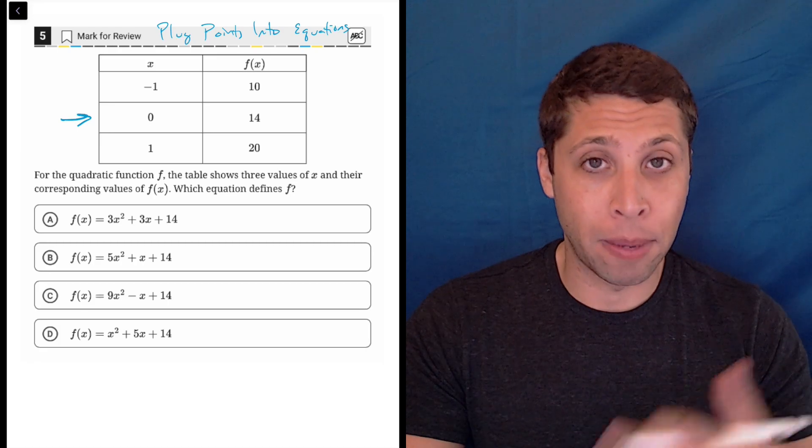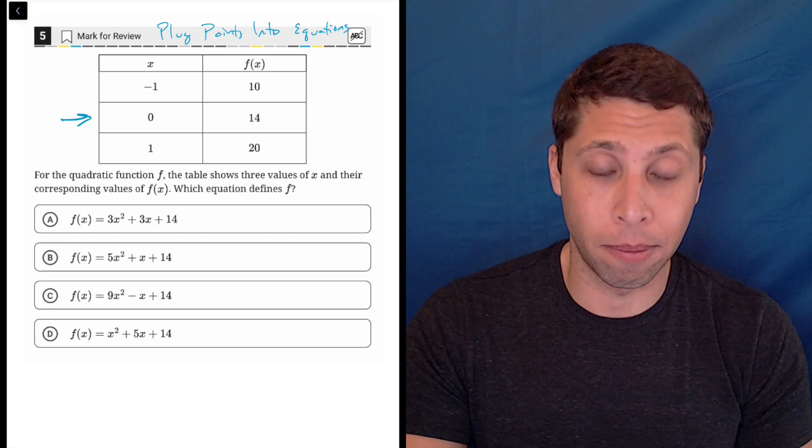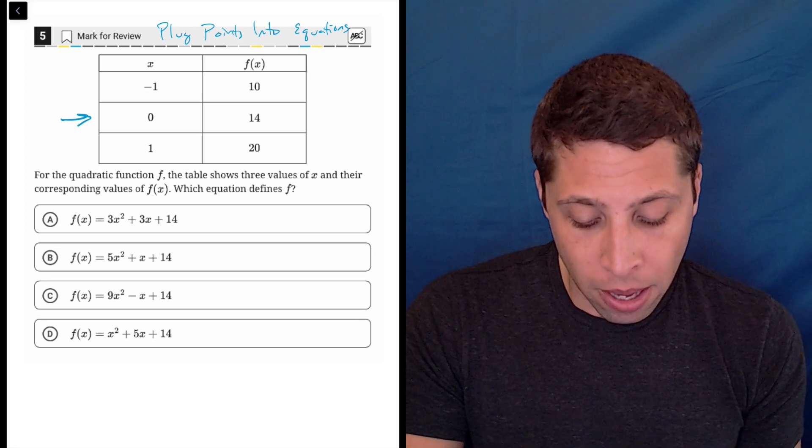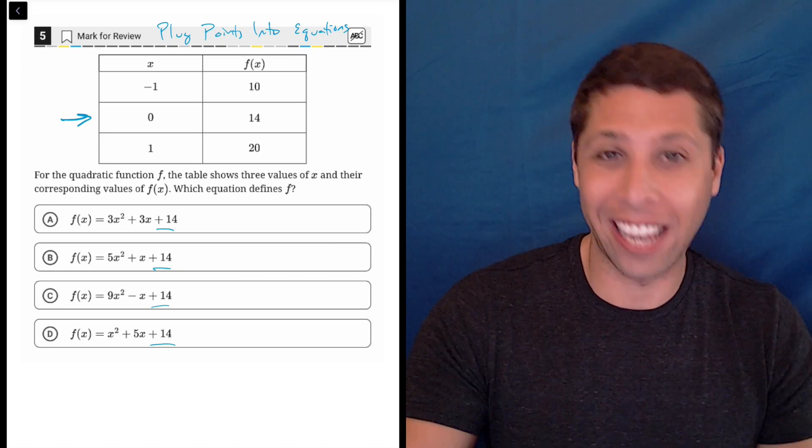Normally when I plug that in, it means that everything kind of disappears. Zero makes a lot of numbers go away. It makes the x's kind of gone. And so for each of them, the result would be 14. So that point sometimes helps me. In this case, it does not.